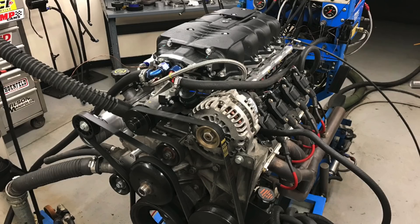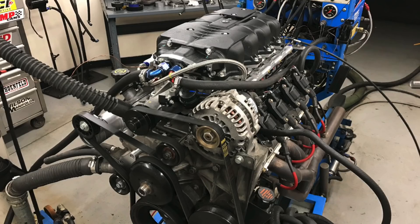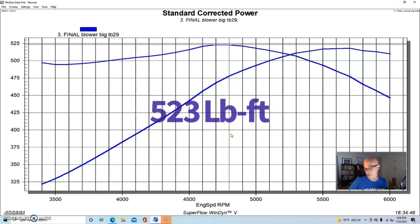Run with the blower it made 518 horsepower at a peak of 11.7 pounds, and torque was up very well at 523 foot-pounds. Here's what happened when we switched over from pump gas to E85—again, we made no changes in timing.